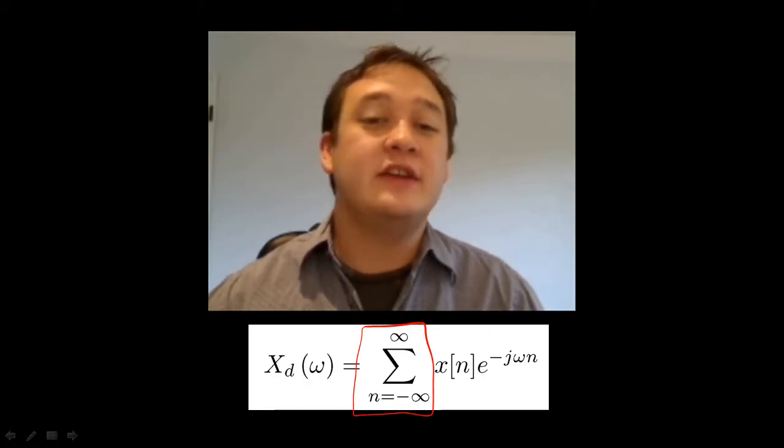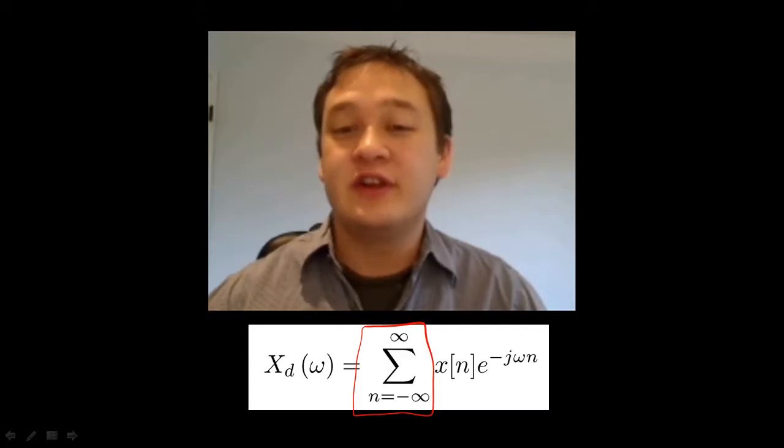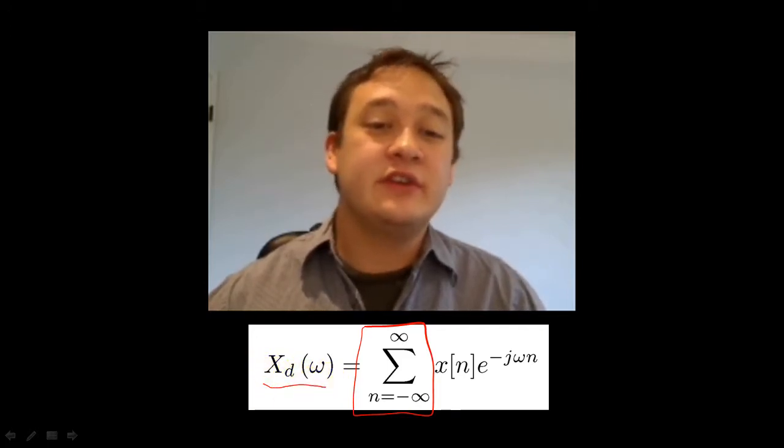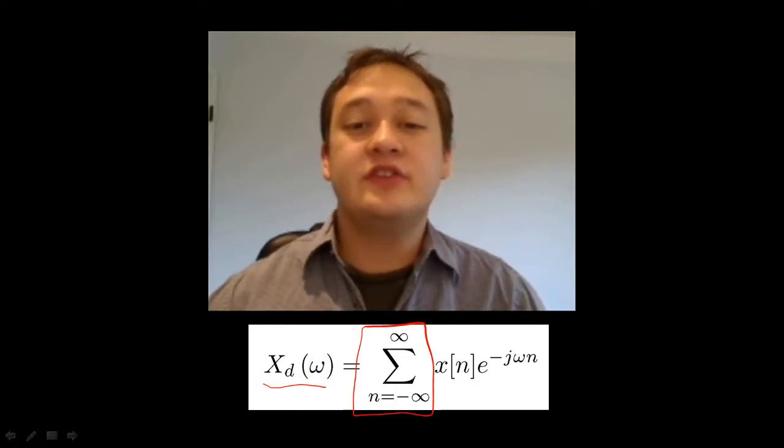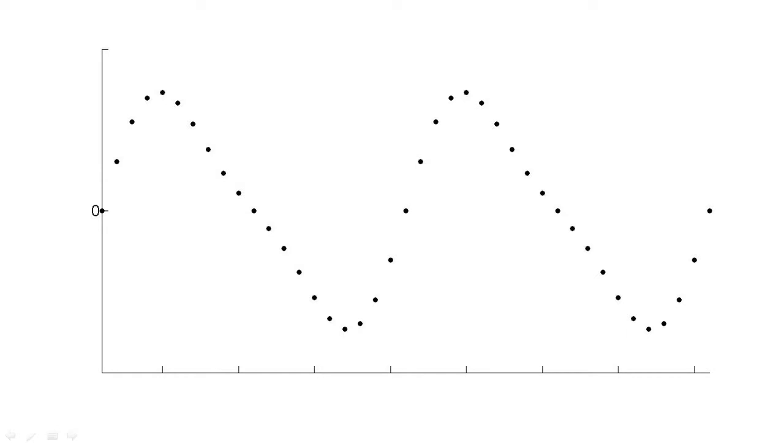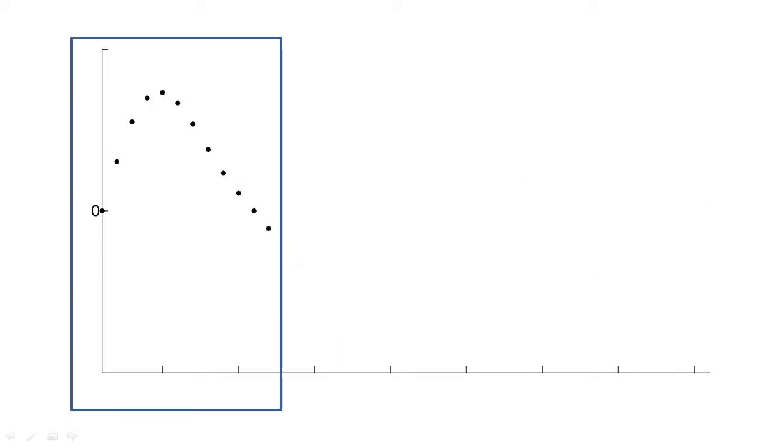And even if we had eternity and infinite storage, the DTFT is a continuous function, so we cannot store the DTFT digitally. So given these two problems, in many situations it is best to approximate the DTFT. Since we cannot always evaluate x of n for all eternity, we often need to truncate x of n to a finite number of samples, N.